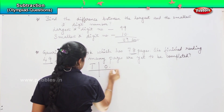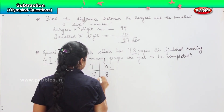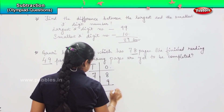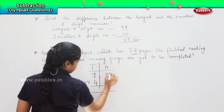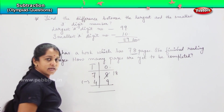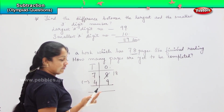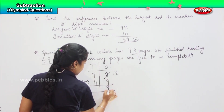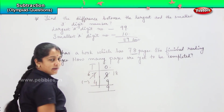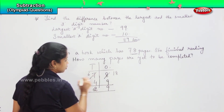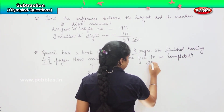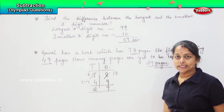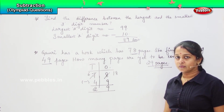Tens, ones — so 78 minus 49. Again, you cannot subtract 8 from 9, so you will borrow: 18 minus 9 — counting down: 17, 16, 15, 14, 13, 12, 11, 10, 9. And since you have borrowed, the tens digit is reduced by one number. So, 6 minus 4 is 2. She has to complete another 29 pages to finish the book. Clear? Are you clear with this? Shall we proceed further?